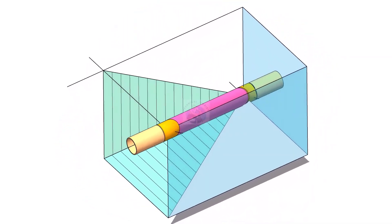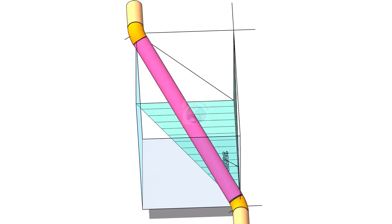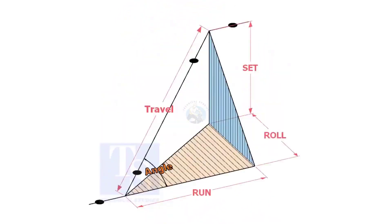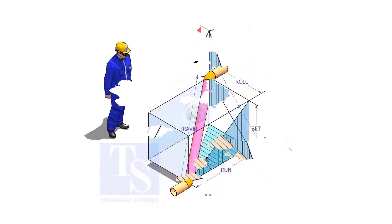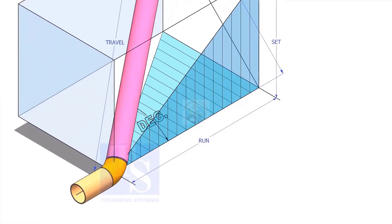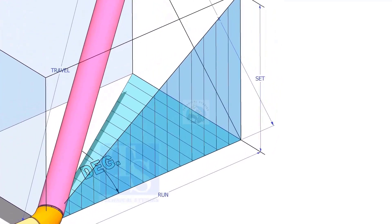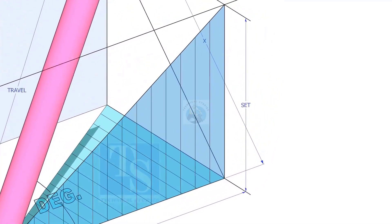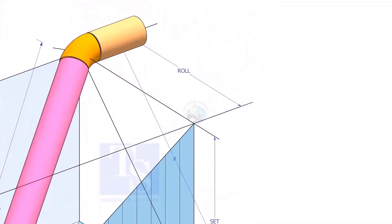Welcome to technical studies. In a piping drawing of a double rolled offset, usually the dimensions of the run, set and roll are given. In this video, I will show you how to calculate the travel length and the including angle of a double rolled offset pipe.